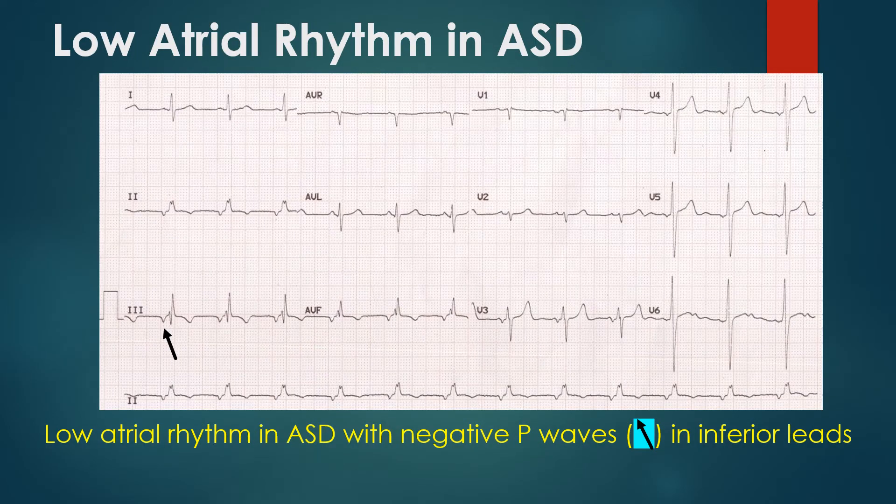Another ECG in ASD shows inverted P waves in inferior leads 2, 3, and AVF. This pattern indicates atrial activation spreading from below upwards, suggestive of low atrial rhythm. Low atrial rhythm can occur with sinus venosus atrial septal defect, as the sinus node may be defective so that an alternate focus arising in the low atrium gives the dominant rhythm.